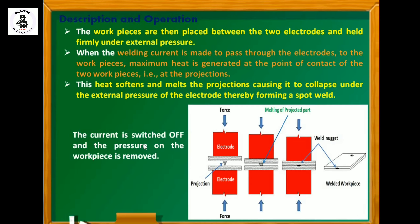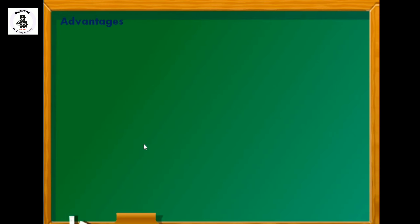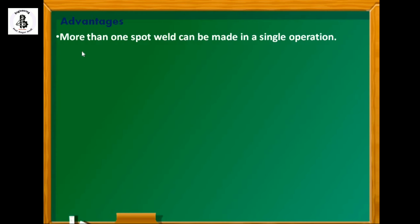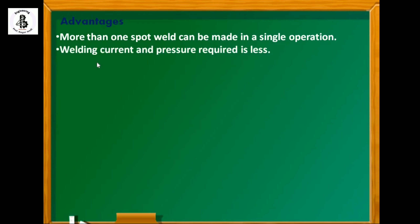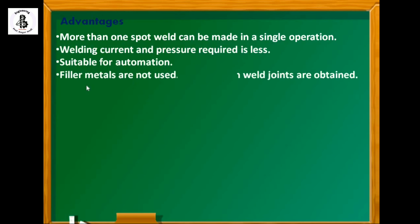The advantages of this process include: more than one spot weld can be made in a single operation, which is not possible in a spot welding process. Welding current and pressure required are less. It is suitable for automation. Filler metals are not used, hence clean welds are obtained.